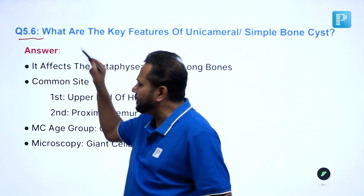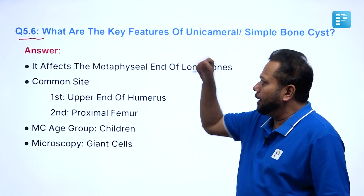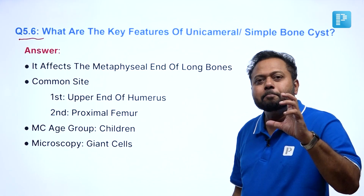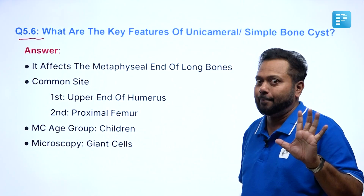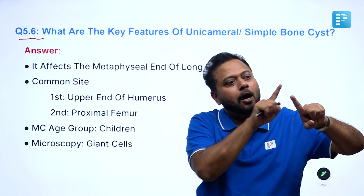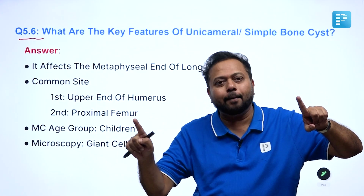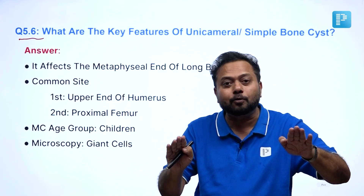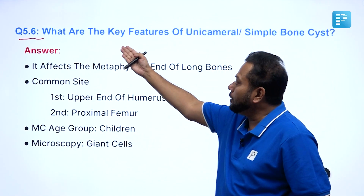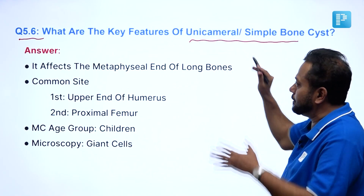This is question number 5.6. We are going to discuss a very important topic — bone cyst. Bone cyst is divided into two types: aneurysmal bone cyst and unicameral bone cyst. Unicameral bone cyst is otherwise called simple bone cyst. That is the topic we are going to see now: what are the key features of unicameral bone cyst, otherwise called simple bone cyst?